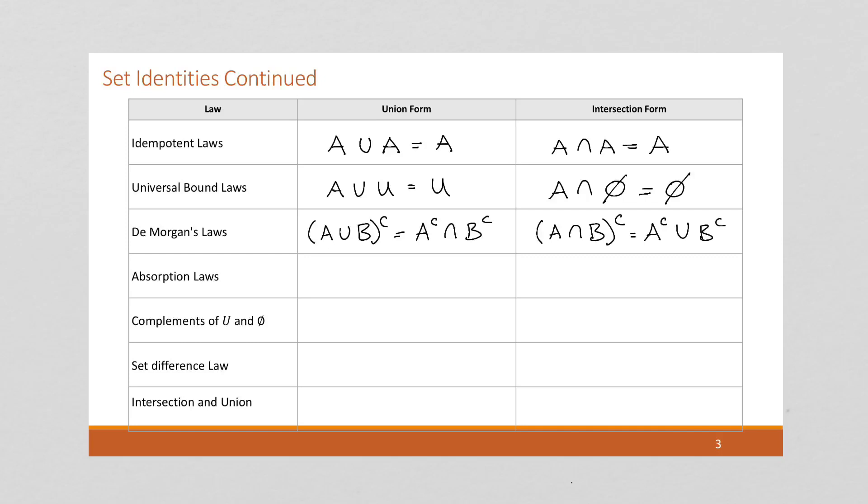The absorption laws. What we're saying is if we union A with the intersection of A and B, think about that for a minute. The intersection of A and B is where do A and B overlap. So it's going to be inside A, and it's going to be inside B. And if we union that with A, what we're going to have left is just A. Similarly, if we say A intersect A union B, A union B is going to be what covers both A and B. And if we intersect that with A, we're going to get A back.